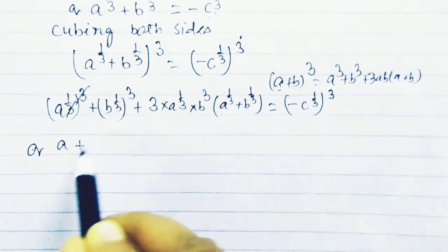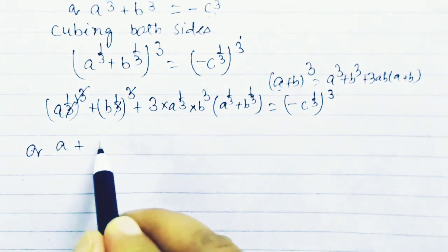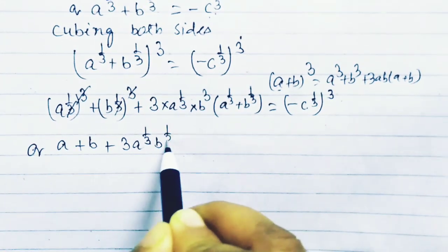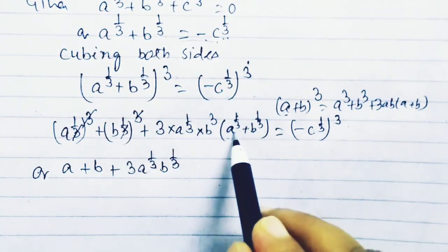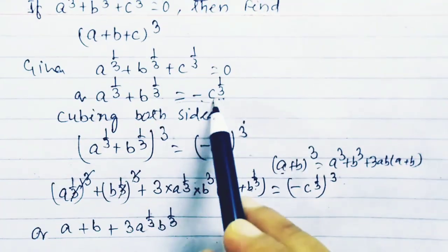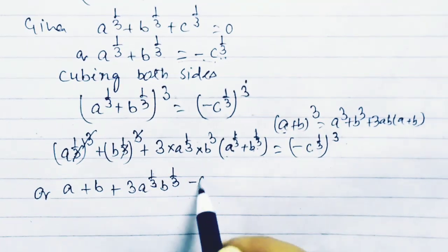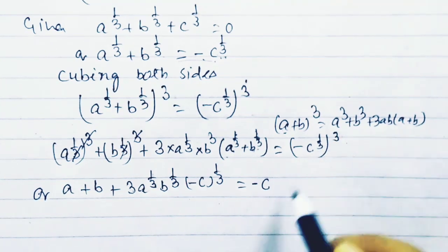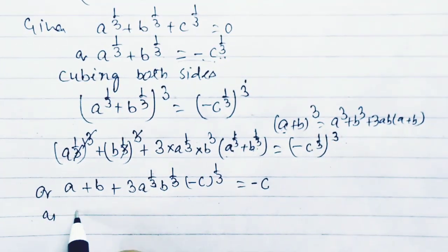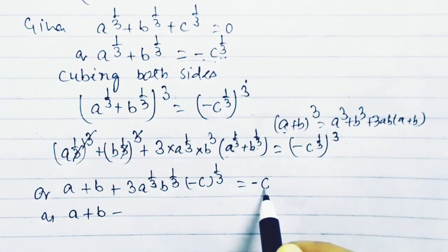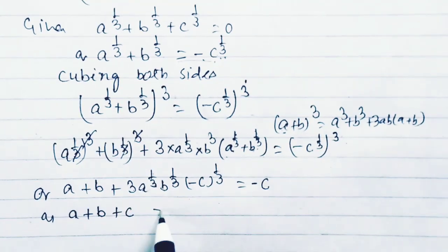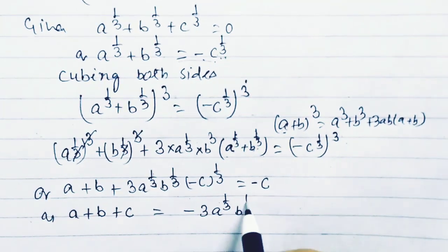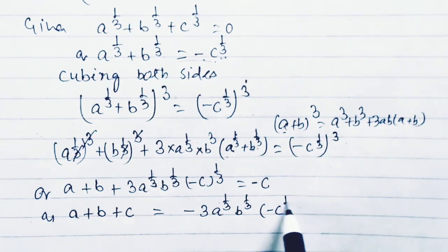This simplifies to a plus b plus 3 times a to the power 1 by 3 times b to the power 1 by 3, and in place of a to the power 1 by 3 plus b to the power 1 by 3 we substitute minus c to the power 1 by 3, giving minus c minus 3 a to the power 1 by 3 times b to the power 1 by 3 times c to the power 1 by 3. Transposing minus c to the left hand side gives a plus b plus c equals minus 3 a to the power 1 by 3 times b to the power 1 by 3 times c to the power 1 by 3.